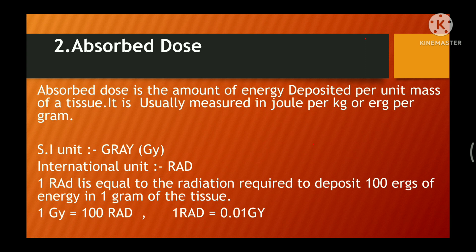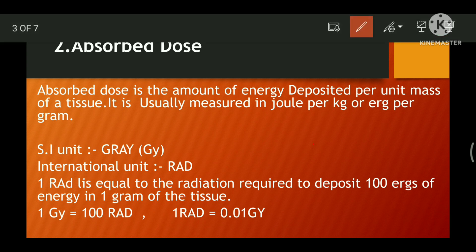Absorbed dose is measured in Joule per kg or Erg per kg — important for objective-type questions. The SI unit of absorbed dose is Gray, and the old international unit is Rad. One Gray is equivalent to 100 Rad, and one Rad is equivalent to 0.01 Gray — important for objective-type questions.